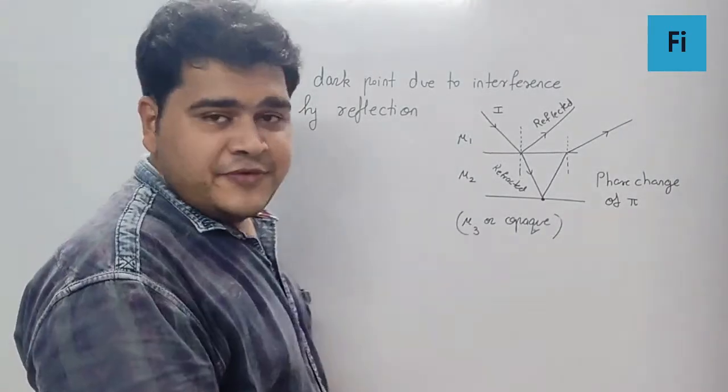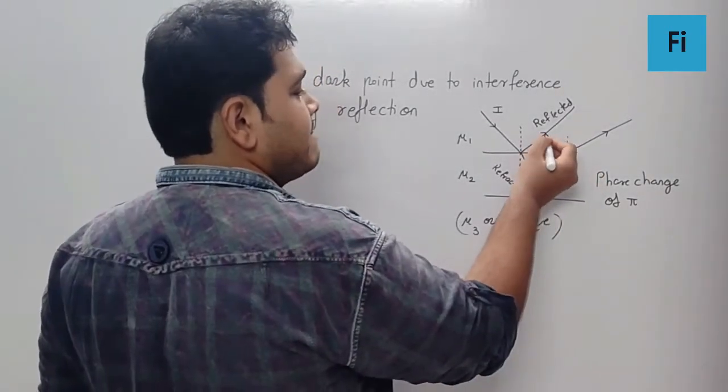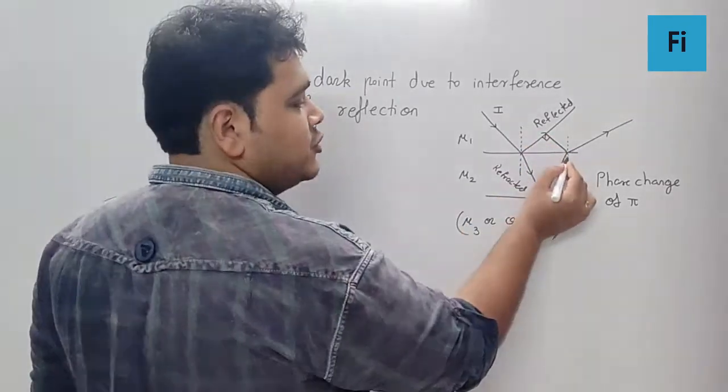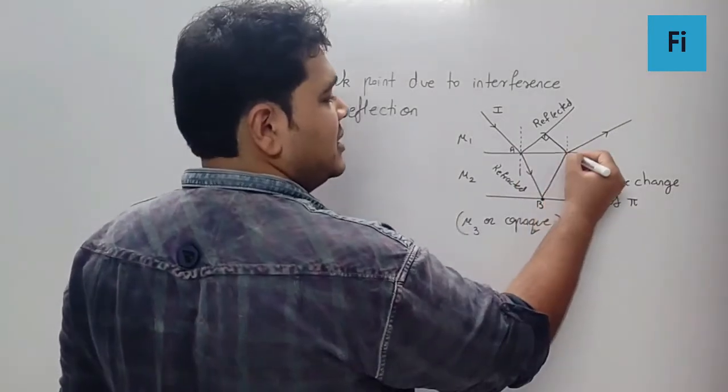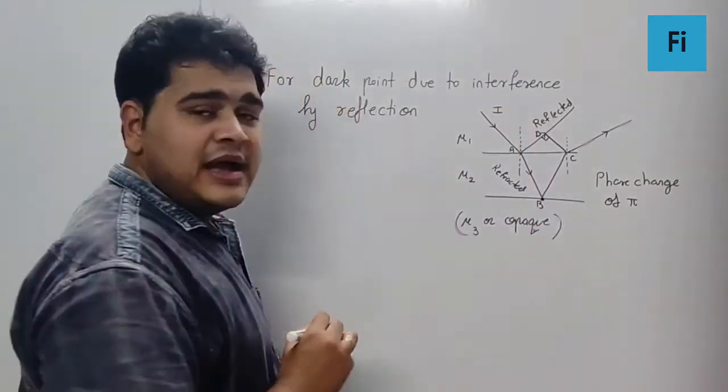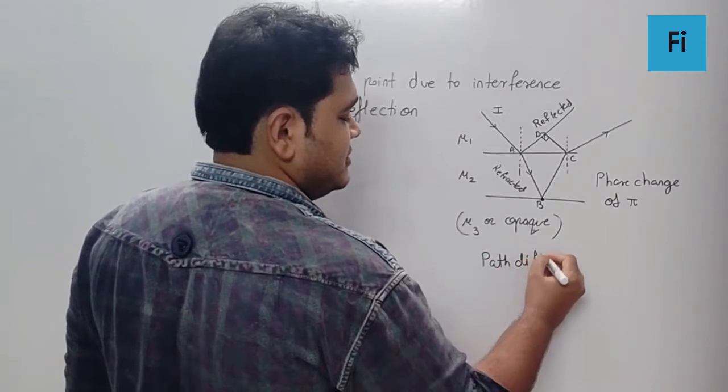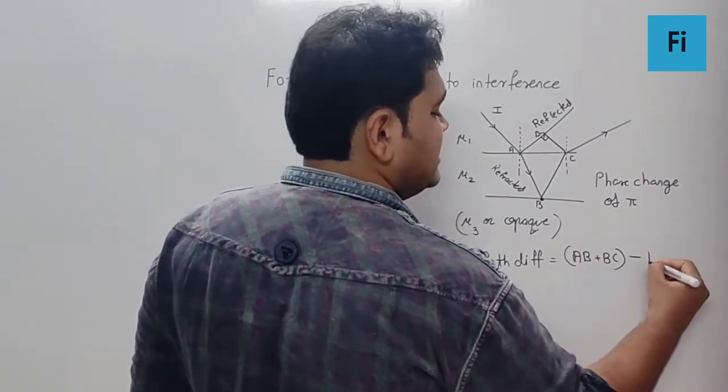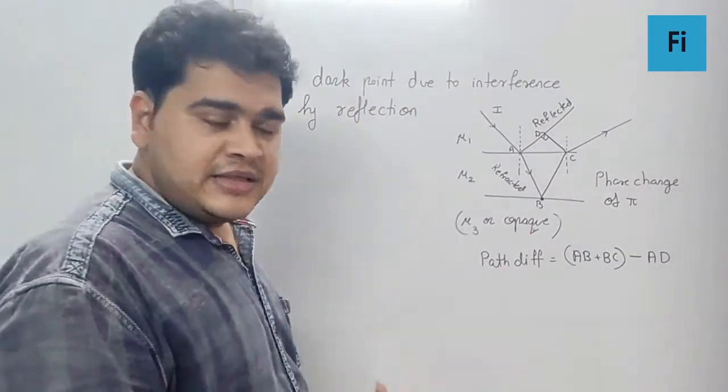At the same time, the exact path difference is going to be something like this. So this is path 1 and this is path 2. If I name this ABCD, I can say the path difference is going to be AB plus BC minus AD.